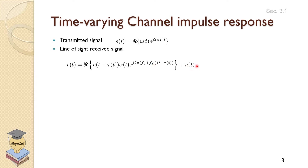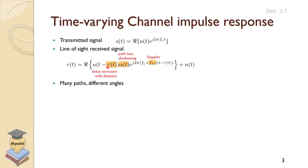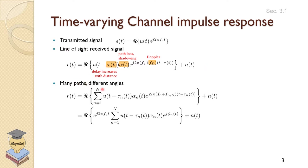For the practical signal, noise will be added to the signal model. The Doppler, path loss, and shadowing impact scale the amplitude. The dominant delay increases with distance. We have many paths with different angles, so instead of one term we have a summation from 1 up to capital N — the number of multi-path components — and we add noise to that.